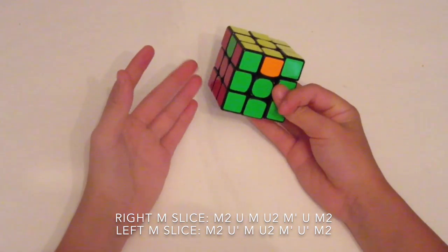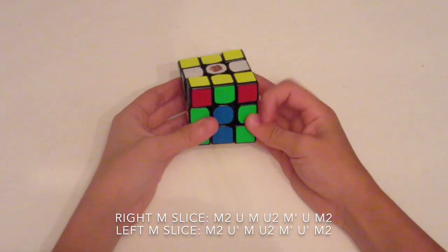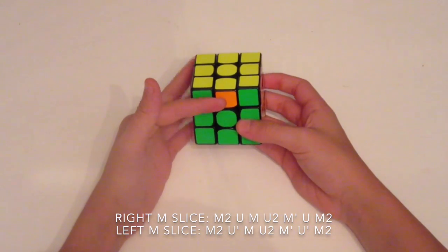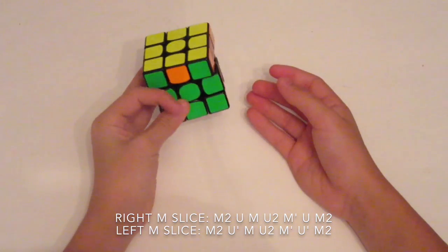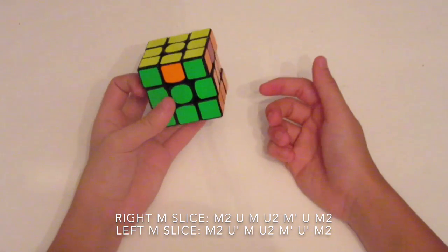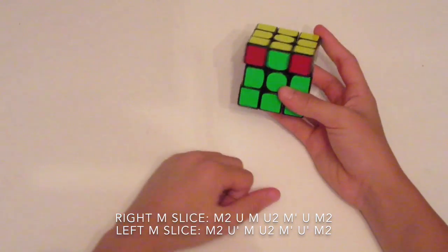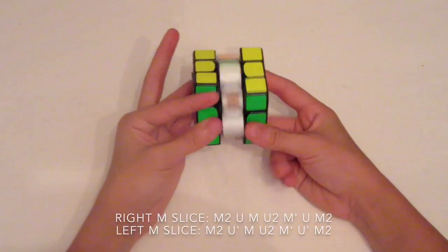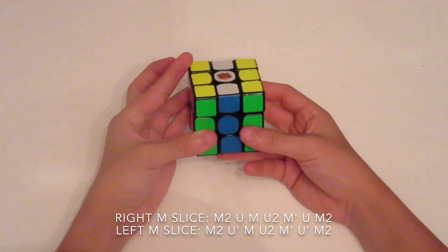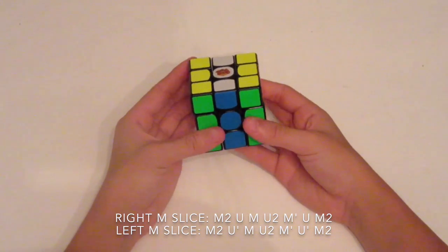M-prime, again pushing with your pointer finger, U, M2. So now I'll show you how to recognize it and how you can know which U-perm you need to perform.